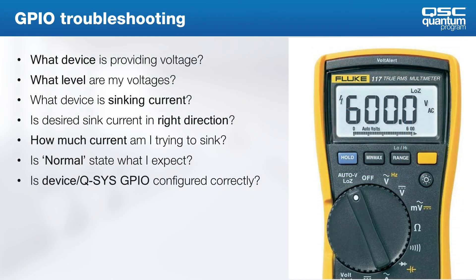For troubleshooting GPIO, you should start at the beginning by asking a few vital questions: What device is providing the voltage? At what levels are my voltages? If I'm configured as an output, what device is sinking the current, and is that sink current flowing in the right direction? Remember that GPIO transistors only allow current to flow to ground and not the opposite direction. Then ask: am I sinking an acceptable amount of current? How many LEDs am I trying to drive with the existing GPIO current configuration? Also, what is the normal state of this device — is my relay normally open or normally closed? For these questions, a voltmeter is very useful.